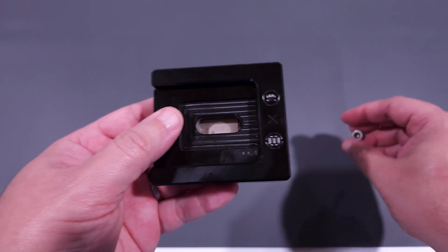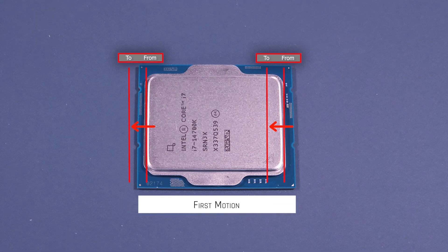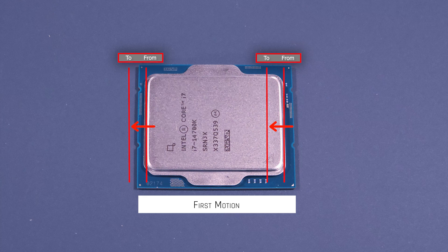EK's own usage instructions state to repeat this process a few times. When looking at the CPU, this is how the two motions work together to eventually shear the IHS free. One thing to note about this motion is that it operates back and forth on the long side of the CPU.